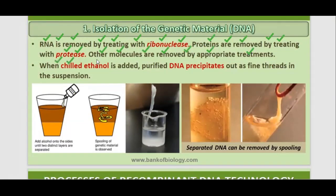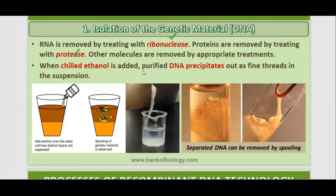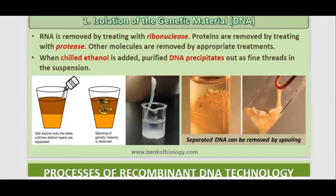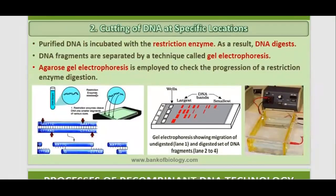Other molecules are removed by appropriate treatment. When chilled ethanol is added, purified DNA precipitates out as fine threads in the suspension. We can remove RNA using ribonucleases and proteins using proteases. After that, when we use chilled ethanol, the DNA is left behind. We have digested the cell wall, digested other proteins and RNAs, and we are left with only the DNA, which we extract in precipitate form using chilled ethanol.